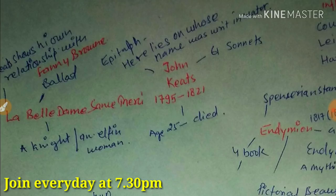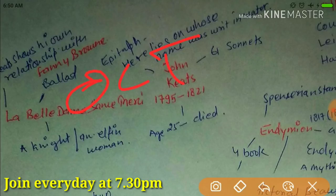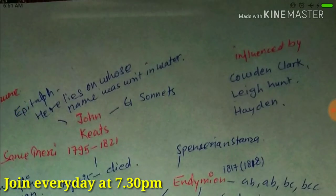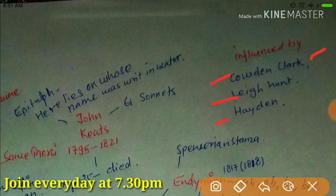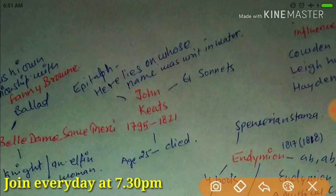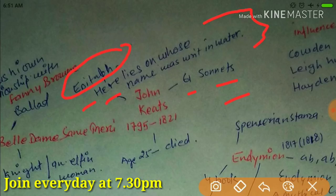If we talk about his life, John Keats was born on October 31, 1795. He was influenced by Cowden Clarke, Leigh Hunt, and Haydon. His sonnets are 61 in number — he has written 61 sonnets.